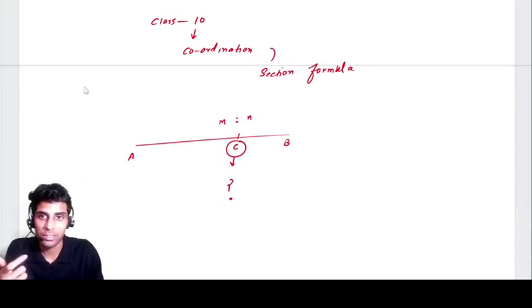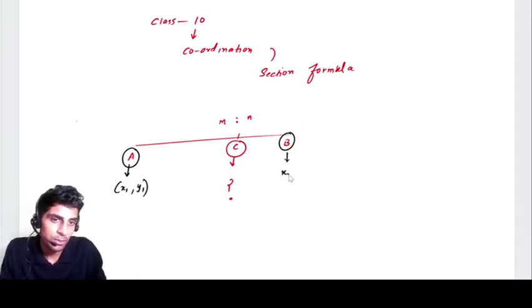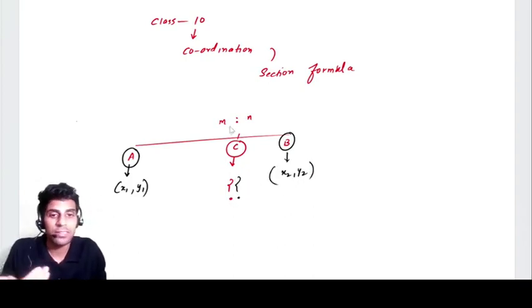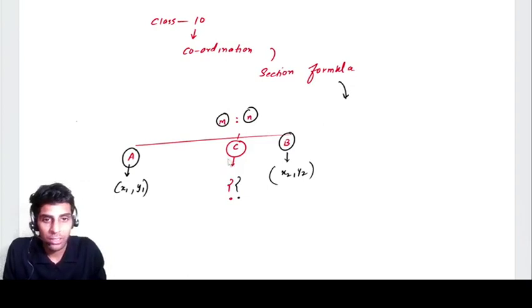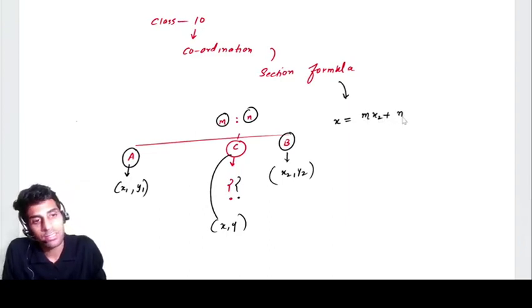I'm repeating the same story again. Listen very carefully. If the coordinate A is given to you, I'm assuming coordinate A is x1, y1, and the coordinate B is also given to you, x2, y2. What I want to know is the coordinate of C. And what is given to us is that C is dividing the entire line in m ratio n. So according to section formula, if x and y are the coordinates of C, then x and y can be calculated using the section formula which is mx2 plus nx1 divided by m plus n.